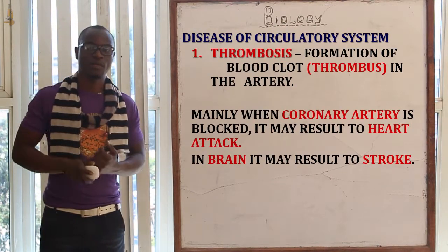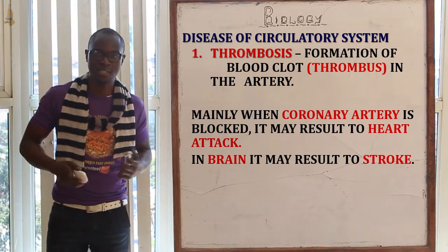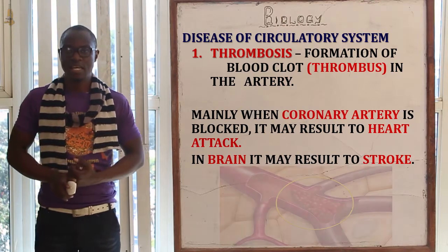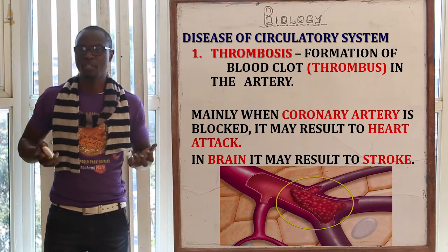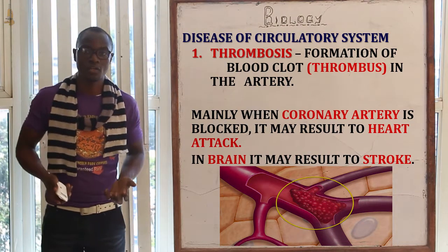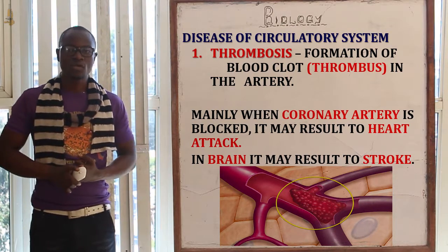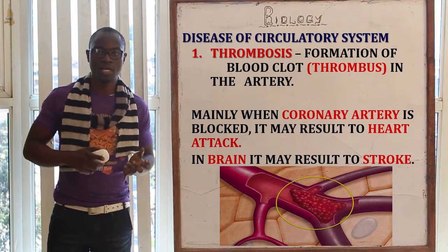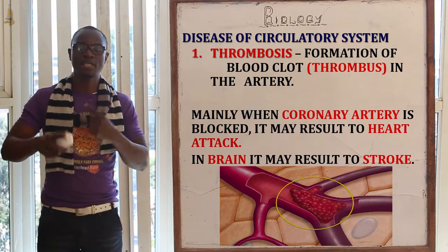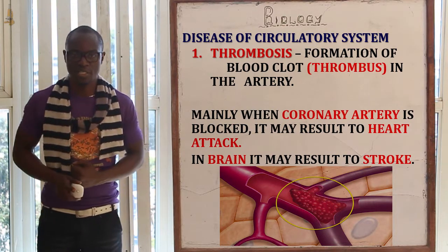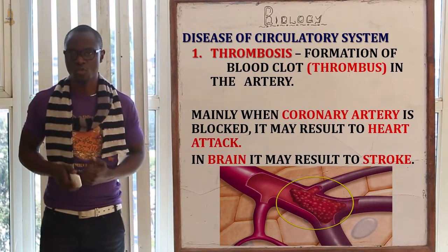Let's now look at the diseases of the circulatory system. The first disease is thrombosis. Thrombosis is the formation of a blood clot — referred to as a thrombus — in the blood vessels. When the coronary artery is blocked — the main artery that supplies the heart with nutrients — it may suddenly result in a heart attack.